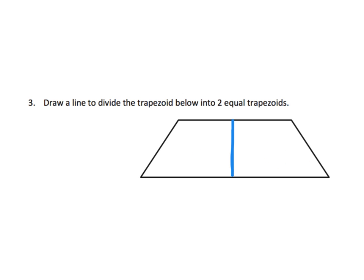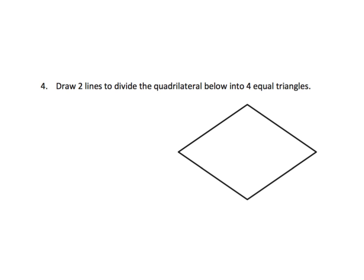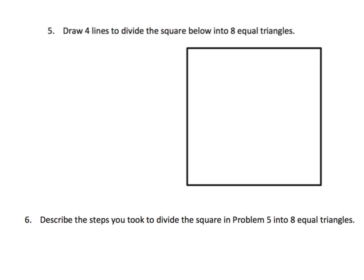Draw two lines to divide the quadrilateral below into four equal triangles. I'm going to start with the idea of let's go corner to corner, and then I'm going to take a look. Do they look like they're equal? Yeah, they do. So I'm going to say, hey, that's it. From a problem solving point of view, I really don't know if this is the only answer. Are there other answers that are possible? Be prepared for students to share some ideas.